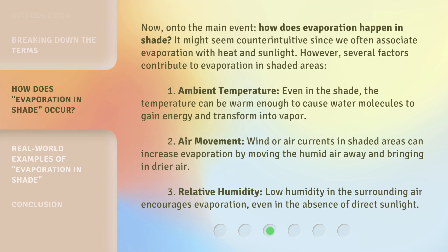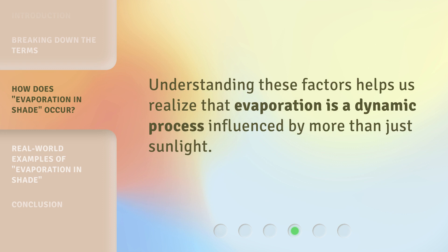How does evaporation happen in shade? It might seem counterintuitive since we often associate evaporation with heat and sunlight. However, several factors contribute. One: ambient temperature — even in the shade, it can be warm enough for water molecules to gain energy and transform into vapor. Two: air movement — wind or air currents move humid air away and bring in drier air. Three: relative humidity — low humidity encourages evaporation even without direct sunlight. These factors show that evaporation is a dynamic process influenced by more than just sunlight.